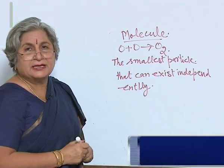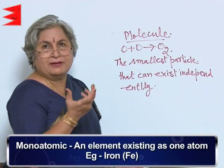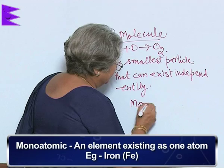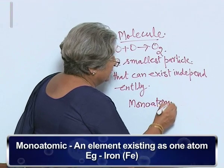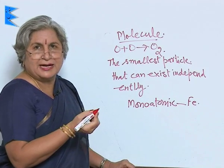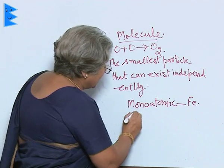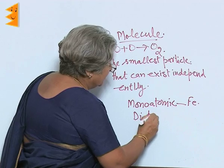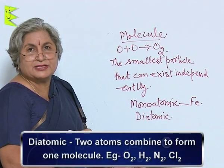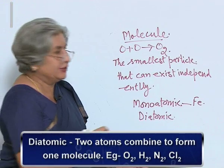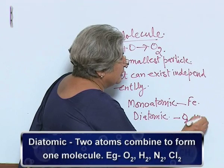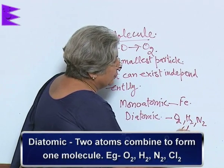In some cases, an element can exist as one atom only — it is called monoatomic. Example: iron. So one molecule is just one atom. In some cases, like specially gases, it is diatomic — that means two atoms combine to form one molecule, like O2, H2, N2, Cl2, etc.